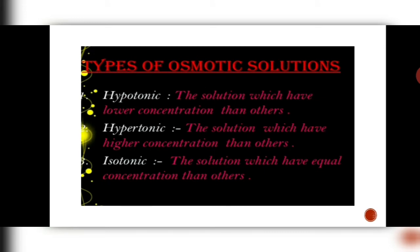There are three types of solutions based on their osmotic concentration. The first is a hypotonic solution — the solution which has lower concentration than others. If the salt concentration or solute concentration in the solution is less, then that is called a hypotonic solution. If it has more concentration of solute, then it is called a hypertonic solution. And if it has equal amount of concentration like the living cell, then it is known as an isotonic solution — hypotonic, hypertonic and isotonic.